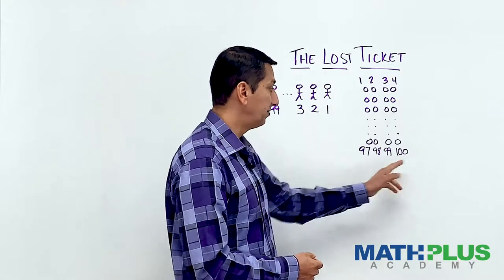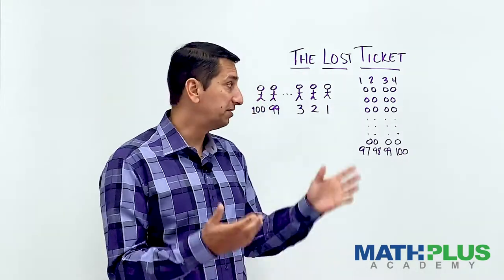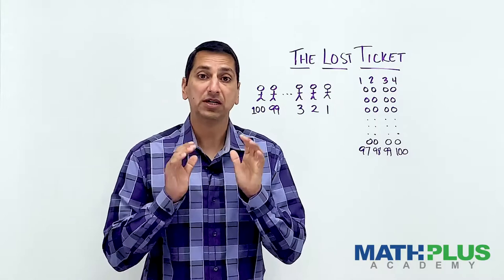One, two, three, four, all the way down to 100. 25 rows, four seats in every row. A hundred seats.